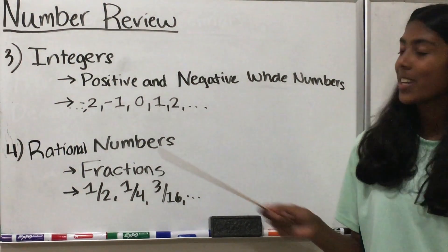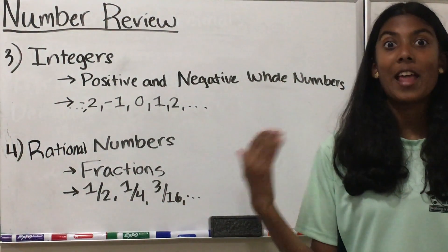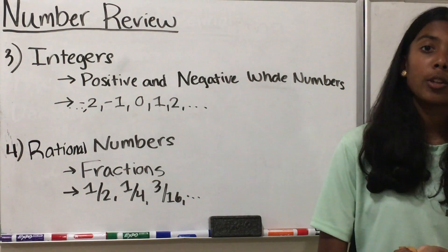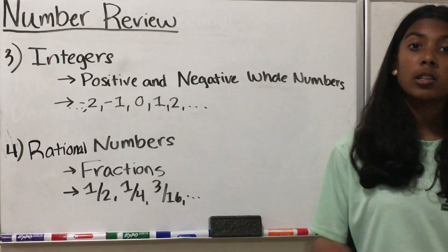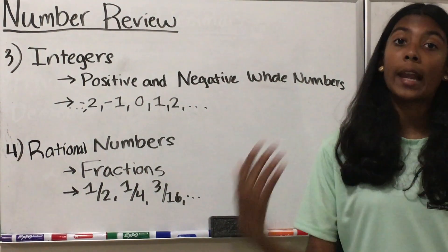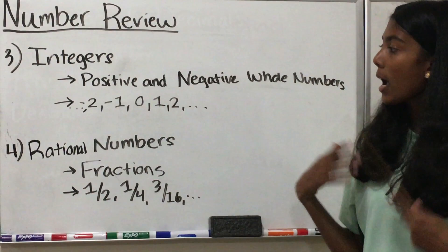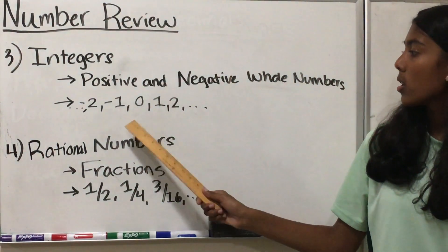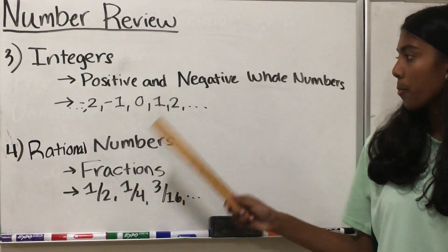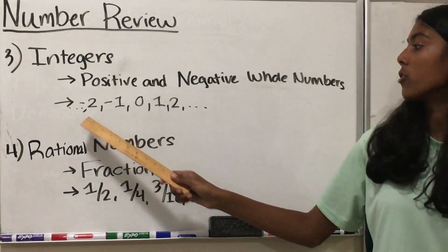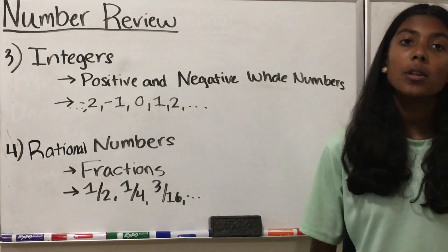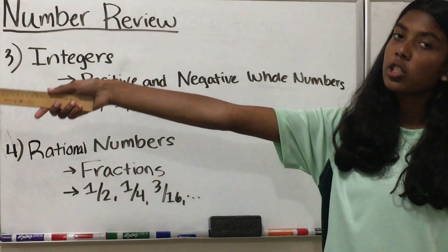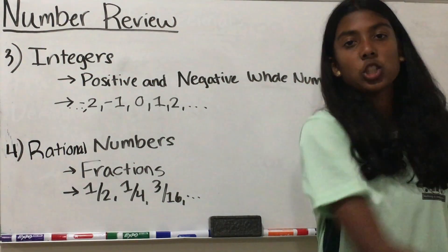Continuing on with our types of numbers, we have our integers. These are basically our positive and negative whole numbers, and they also include zero because zero is neither positive nor negative. Some examples are negative 2, negative 1, 0, 1, and 2. It doesn't start at negative 2 and it doesn't end at 2 — those are just some examples. It goes forever in both directions.